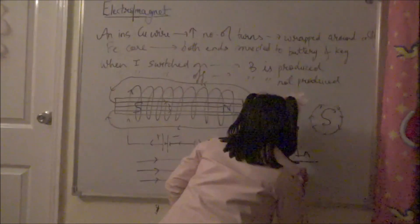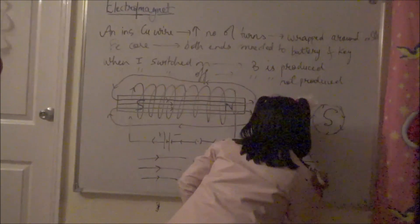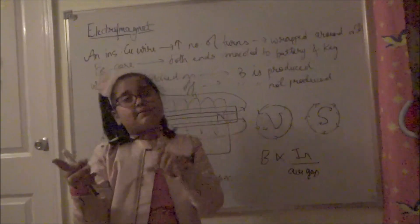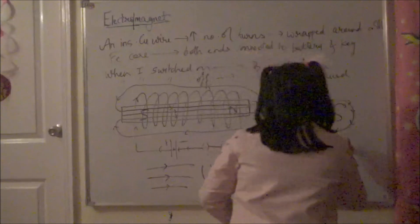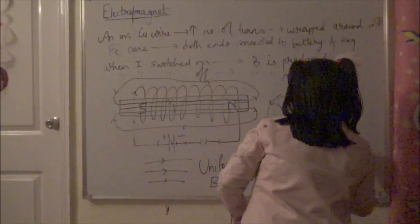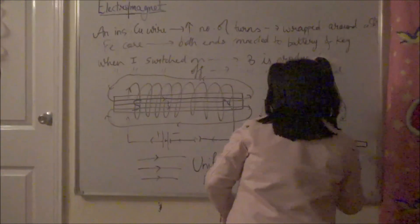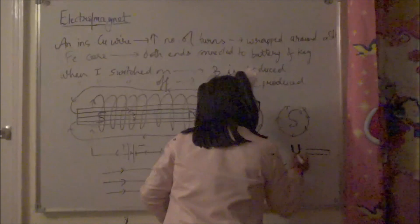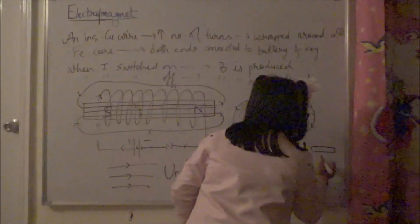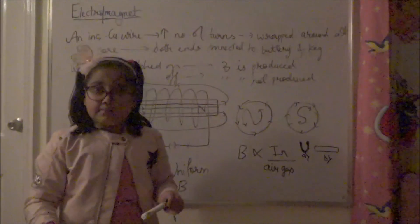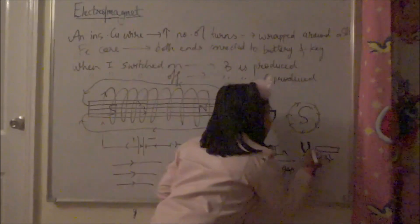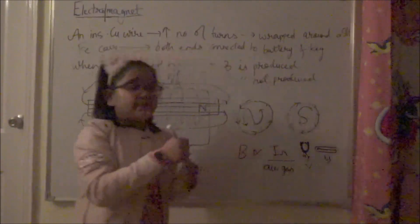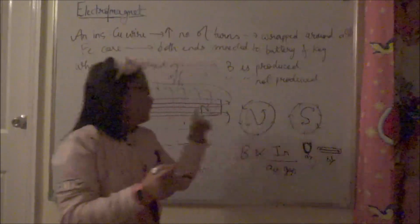The third factor is the air gap between the poles. The magnetic field is inversely proportional to the air gap between the poles. When poles are far apart, the magnetic field is weaker. An electromagnet with a smaller air gap between poles will produce a stronger magnetic field compared to one with a larger gap.